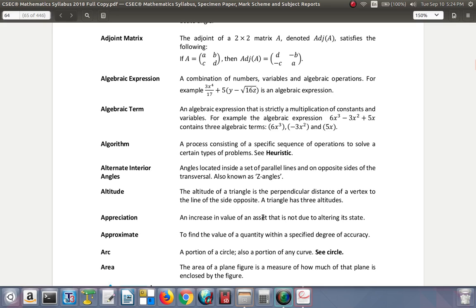The altitude is a perpendicular line, the perpendicular distance at 90 degrees to the vertex. Appreciation: an increase in value of an asset that is not due to altering its state. For example, house and land values increase over time. Arc: a portion of a circle, or a portion of any curve.